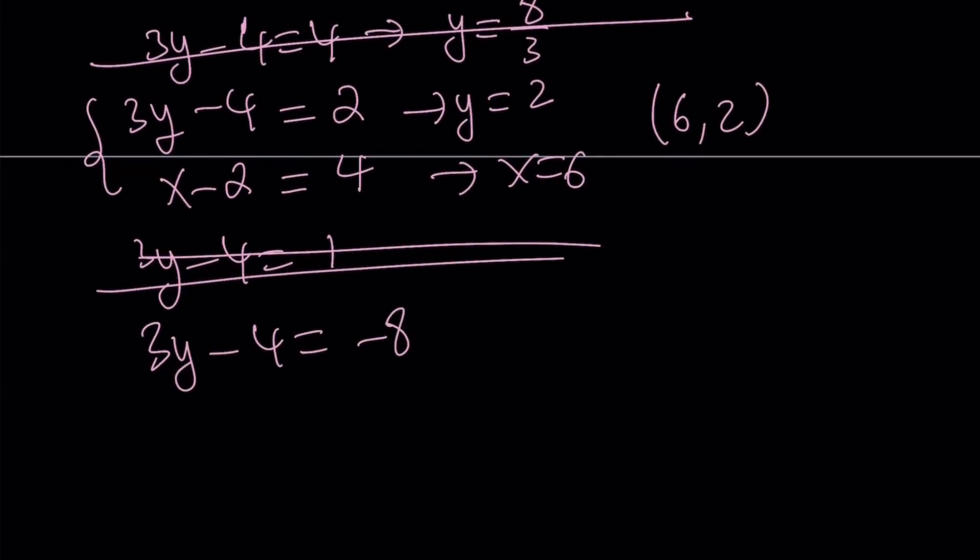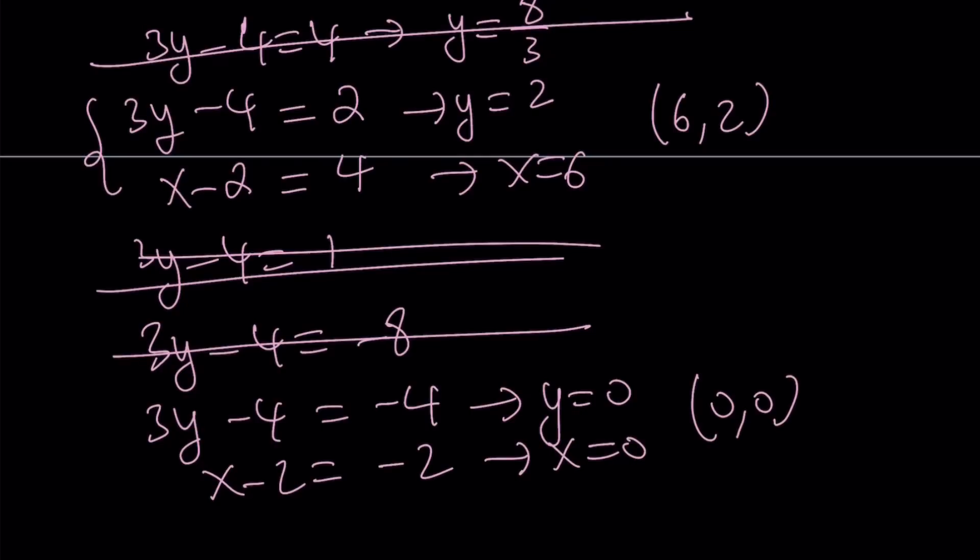If this is equal to negative 8, y is not going to be an integer. So we'll skip that case. If we set this equal to negative 4, from here y becomes 0. And x minus 2 equals negative 2 is also going to give you x equals 0. So 0 comma 0 is another valid solution.